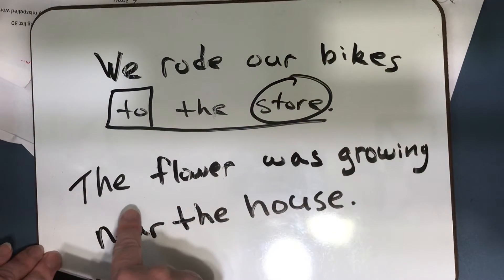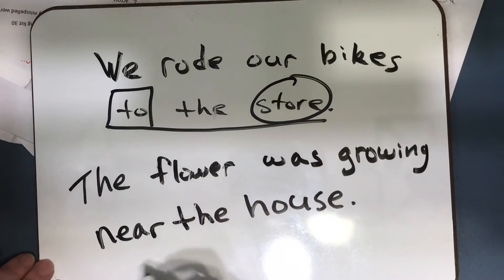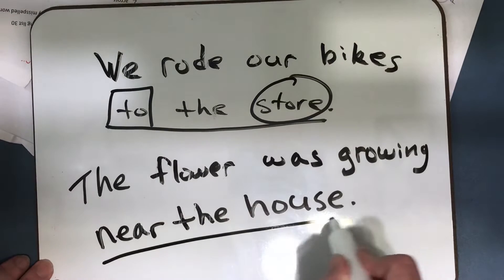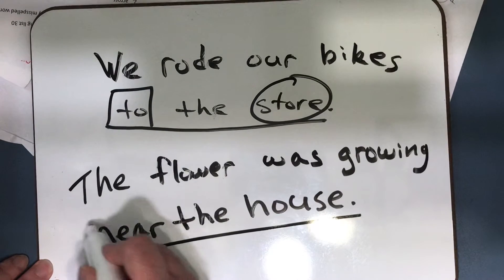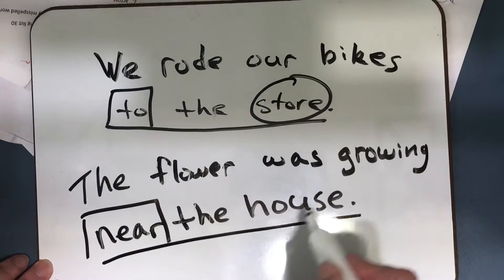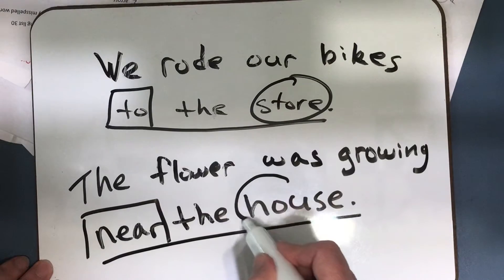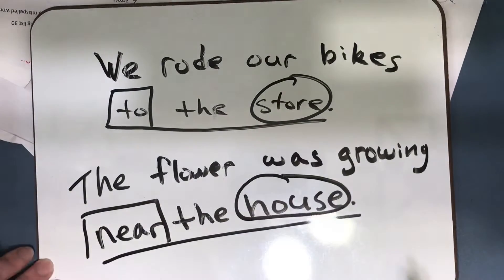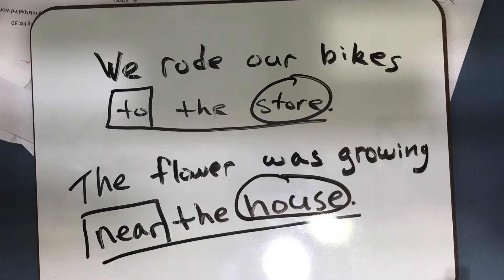Here's another sentence: The flower was growing near the house. Near the house is the prepositional phrase. The preposition is near. The object of the preposition is house. The object of the preposition is always the last word in the prepositional phrase, and it will be a noun or a pronoun.